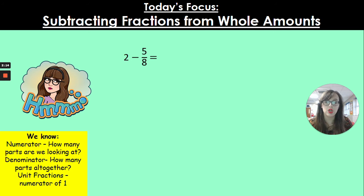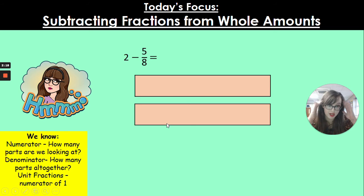So we have 2 wholes take away 5 eighths. The first thing I'm going to do is imagine these 2 holes in my head. I want to take away 5 eighths, which means I need to turn these 2 holes into eighths. There we are. You can see I've split 1 of them up into 8 pieces. There are 8 eighths in 1 hole. In 2 holes, there would be 16 eighths, 2 lots of 8.